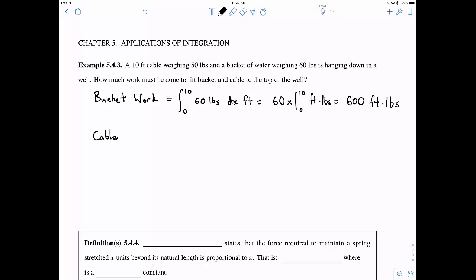Now the more complicated one is the cable. So the cable, again, it's going to be some integral from zero to 10, but it weighs 50 pounds initially. This entire 10 feet thing weighs 50 pounds. And so when it's hanging all the way down, this 10 feet down, there it is, 50 pounds.